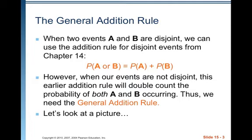However, when our events are not disjoint — when they can occur at the same time — this earlier addition rule will double count the probability of both A and B occurring. When you do the probability of A it will be included, and when you do the probability of B it will be included, so you've added the overlap twice. Thus we need the general addition rule.